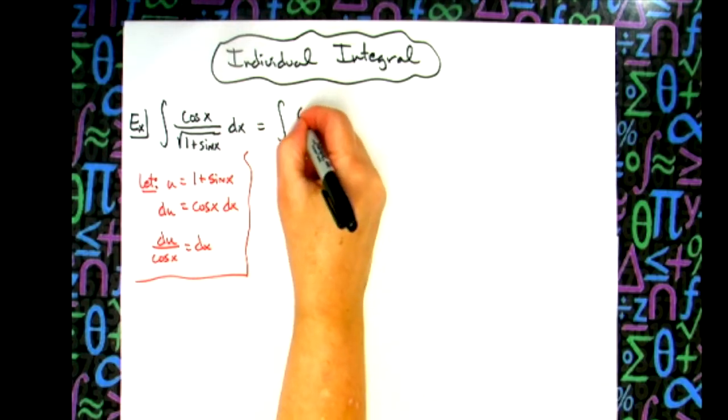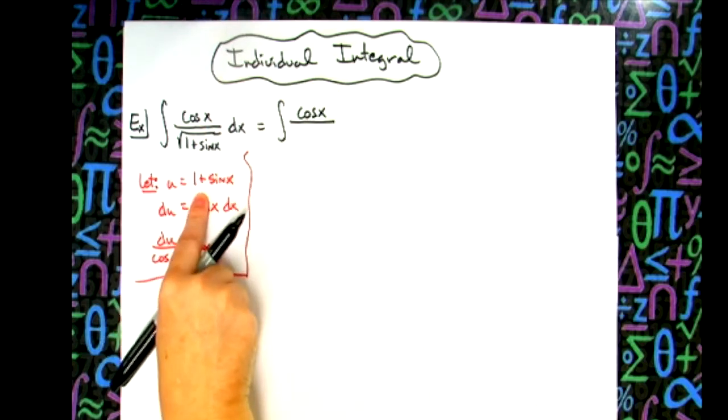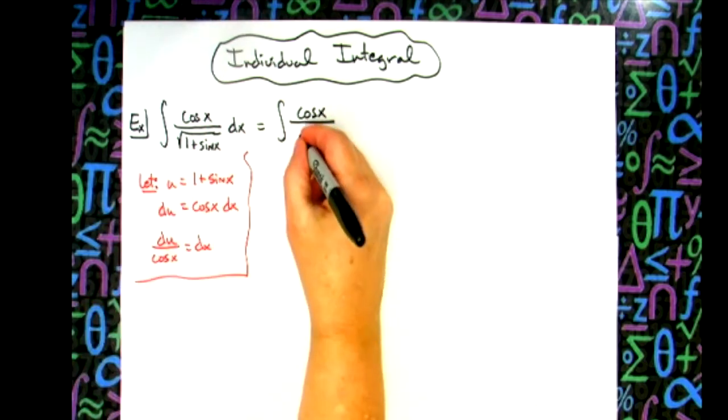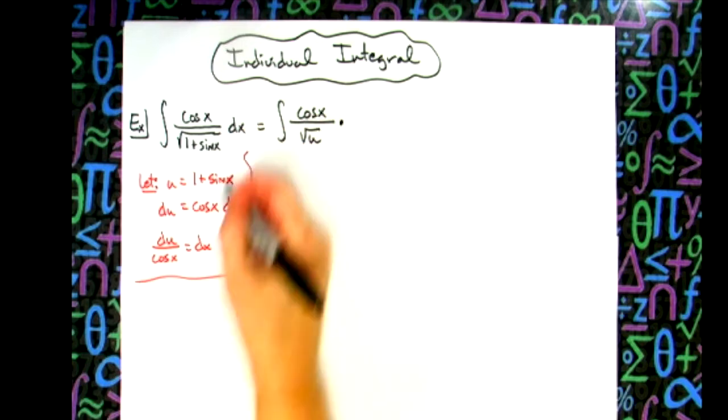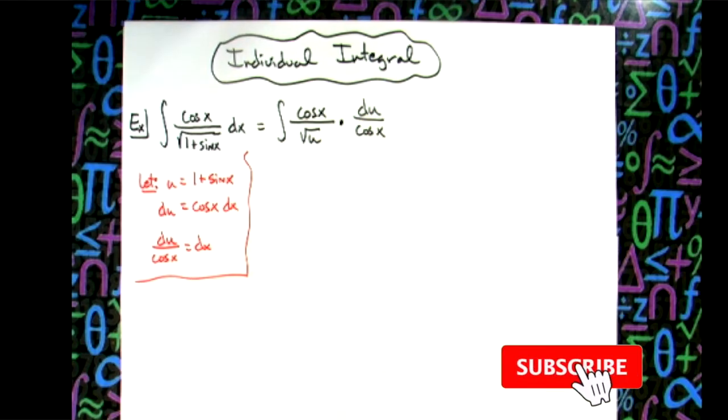So we'll have the integral. Our cosine x will stay in the top. I'm going to replace what's underneath that radical with a U, so I'll have a square root of U. We'll replace dx with what it equals, which is du over that cosine x.